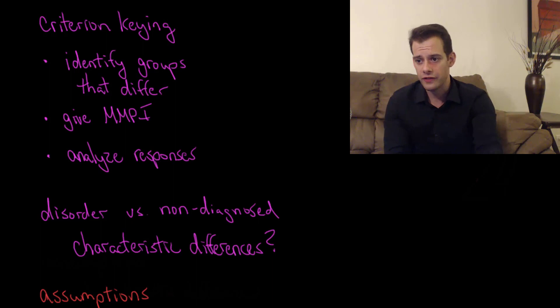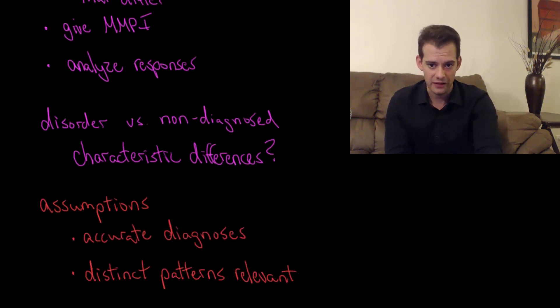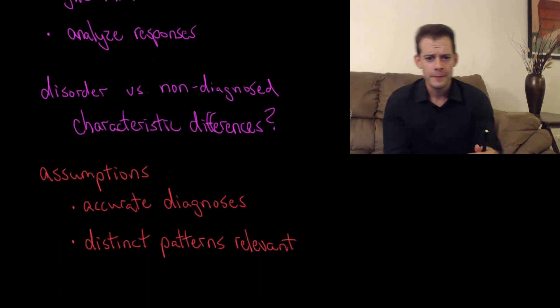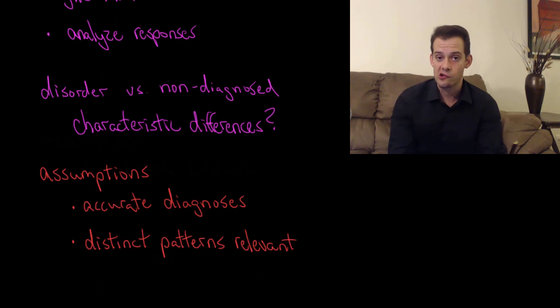Now we have to be careful because there are a few assumptions involved in that process. These assumptions are, first of all, that the groups we're looking at have accurate diagnoses. If it turns out that the diagnosis of depression that these people have received is not accurate, or schizophrenia or any other disorder, then that's going to mix up this process of looking for this pattern because maybe some of those people shouldn't be in the depression group.